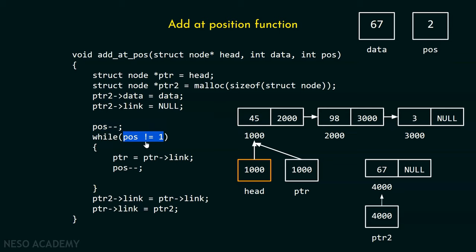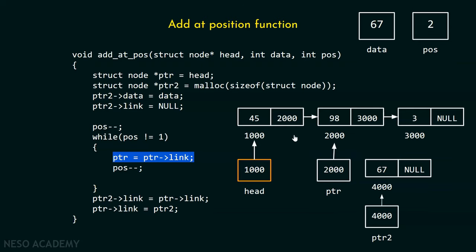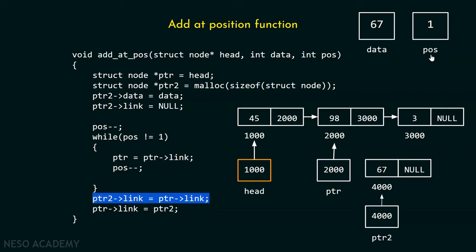We decrement POSE and check if POSE is not equal to one. Since it becomes two, we enter the while loop, update ptr to ptr->link, which is address 2000, so ptr now points to the second node. We decrement POSE again and it becomes one, so the condition is false and we exit the loop. Note that you can also check POSE not equal to two instead — the logic just needs to ensure the pointer moves one position forward to where we want to insert.